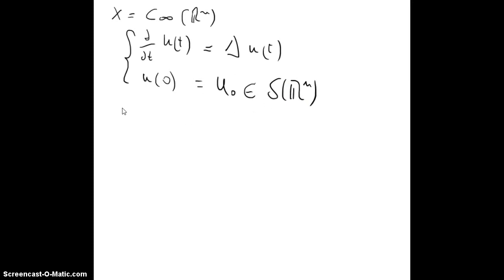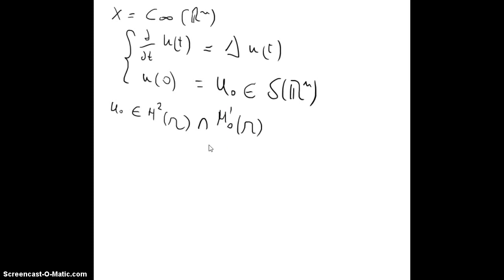This can be modified. If you look it up in other sources, you will see that sometimes u_0 is in H^2(Omega) intersected with H^1_0, the closure of H^1. But in this case we will just work with u_0 in the Schwartz space, where we can manipulate functions with the Fourier transform without any problem.